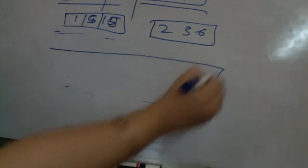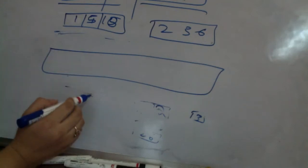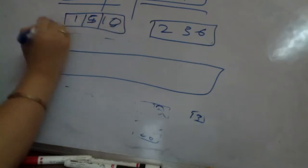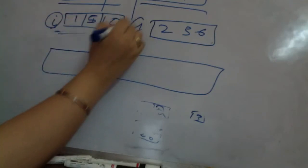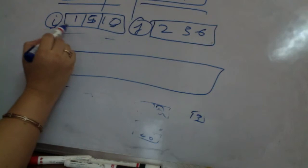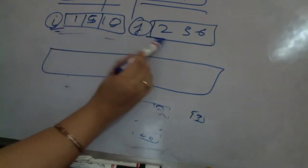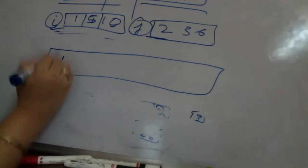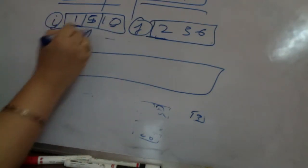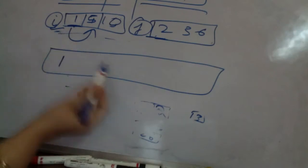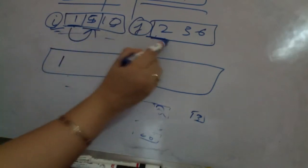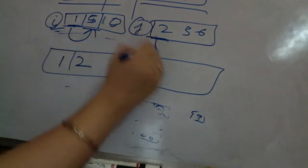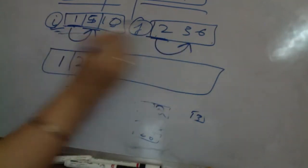How do you merge them? What is the procedure for merging? If this is the first array and this is the second array — this is having an index i, this is having an index j. I check if a[i] is less than b[j]; whatever is smaller, I copy here. Since 1 is less than 2, I copy 1 and move i to the next location. I again check: 5 is less than 2? No.